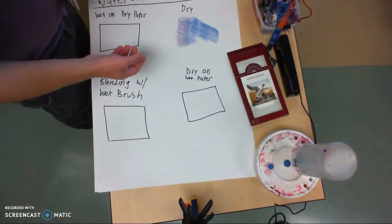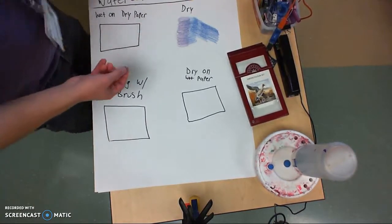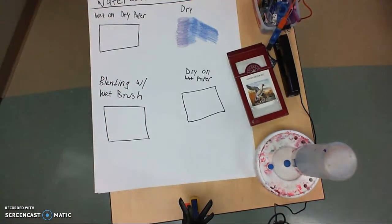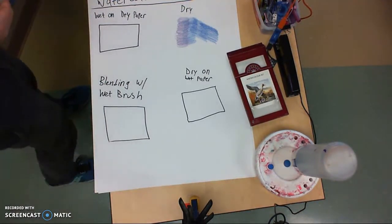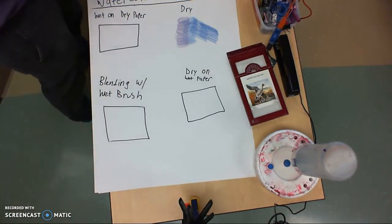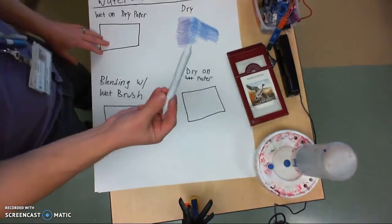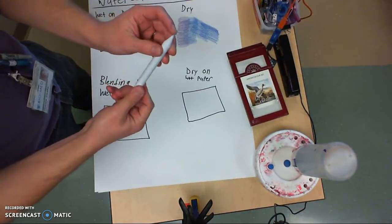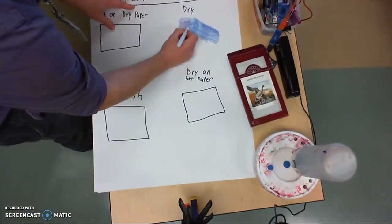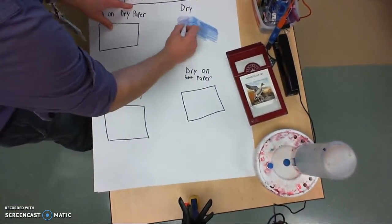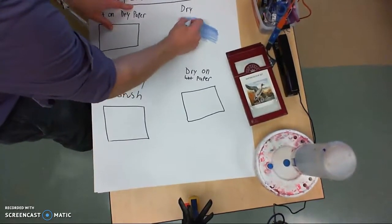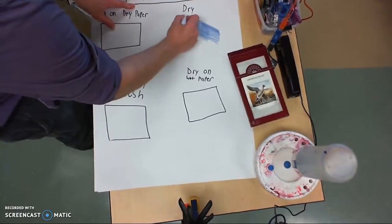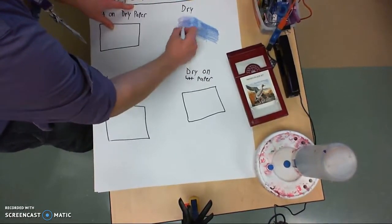I have another tool called a blending stump or a tortillion. That is a roll of paper that's glued into a really tight roll and you can also sharpen this. You can take this and use this with some pressure to blend your color pencil together. I can pull it up a little bit into the white paper there so you can see.